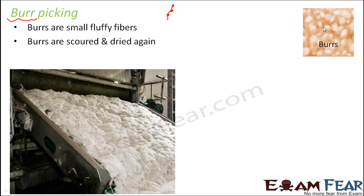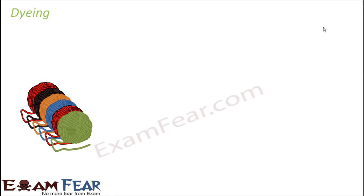Once burr picking is done, the next step is dyeing. We wear sweaters and jackets of many different colors, but that doesn't mean a green sheep had to exist. Most sheep are white, brown, or cream in color. The wool fibers obtained are then dyed into many different colors so we can obtain wool in multiple colors.